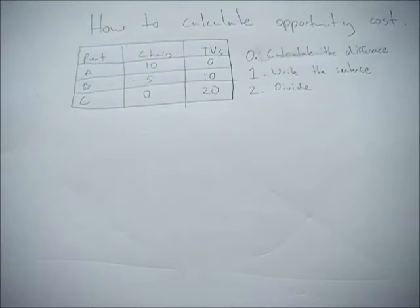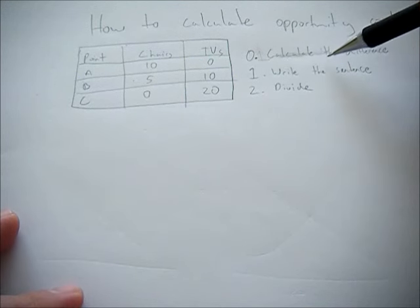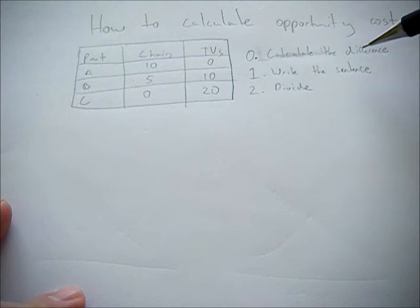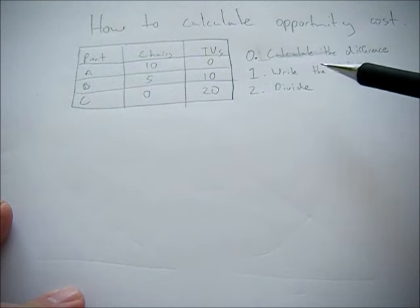This video will go over my method for calculating opportunity cost, and it should be fail-safe. It consists of three steps. The first one you may or may not have to do depending on the problem, is calculate the difference. The second is write the sentence. The third is to divide.